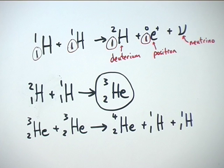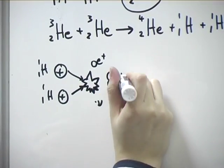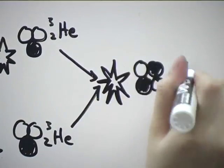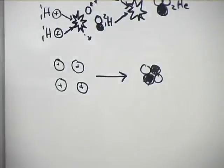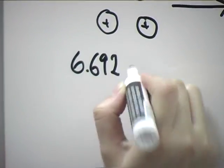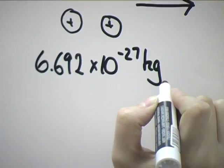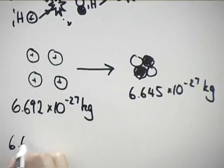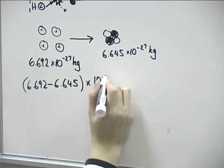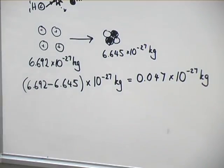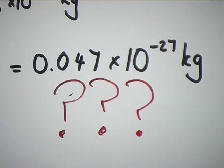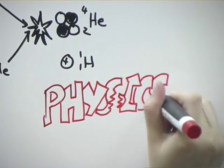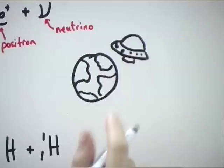If we compare the mass of four protons with the mass of the helium nucleus, we can see that they don't match. Four hydrogen nuclei have a mass of 6.692 times 10 to the minus 27 kilograms, and the mass of one helium nucleus is 6.645 times 10 to the minus 27 kilograms. The difference is 0.047 times 10 to the minus 27 kilograms. A tiny bit of mass has been lost, but surely this breaks the laws of physics. Mass can't just start disappearing around the universe or we'd get into all sorts of trouble.